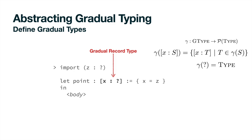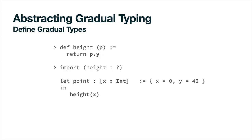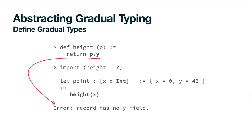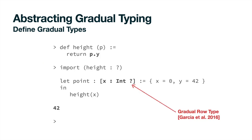Gradual records map fields to gradual types, and their meaning is recursively determined. Because AGT enforces type restrictions globally, gradual records may still appear too restrictive in some programming situations. For example, this program produces an error even though the access to field Y happened in a dynamically typed function. To make the type system more flexible, the gradual design introduces another type, where an extra marker means that more fields with unknown types might be present in the record. Garcia and others named this type a gradual row type.